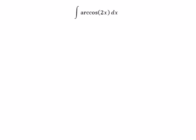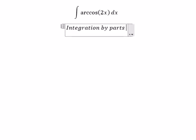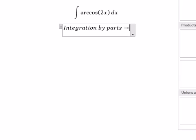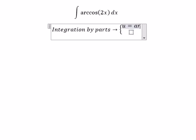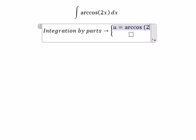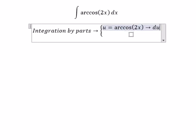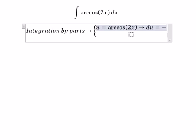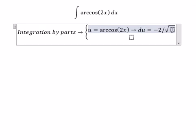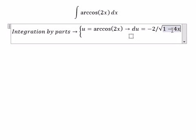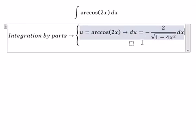The technique we need to use is integration by parts. We have u and dv. u equals arccos(2x), so du equals negative 2 over the square root of 1 minus 4x squared dx.